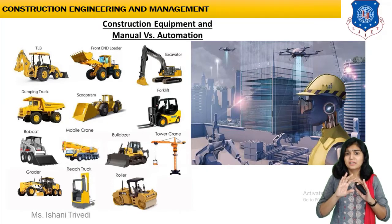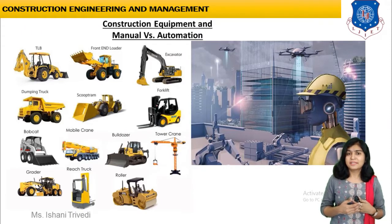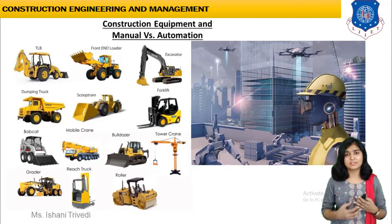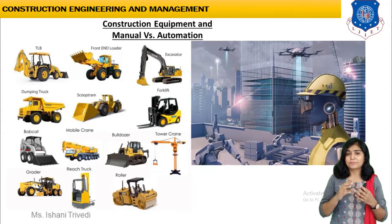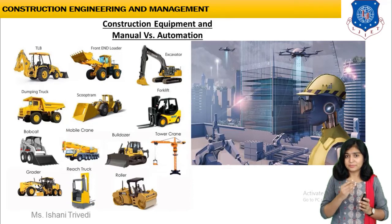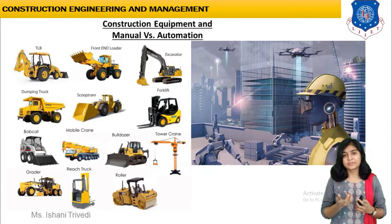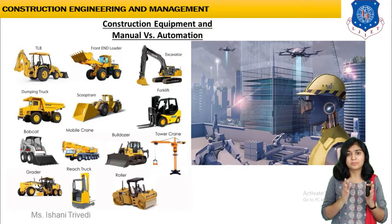On the right image, what you see may be a little hypothetical for now, because currently advancements and inventions are ongoing in the automation section. In the right image you can see it is completely automated — starting from the engineer, which is robotic. You can see a robot, and from planning, designing, construction, and execution, all of these things will be done automatically with the help of robotics.